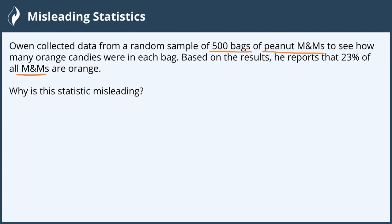However, because he makes the claim that 23% of all M&Ms are orange, this makes the sample biased. So we have a biased sample, and this is why our statistic is misleading. And we're all done!